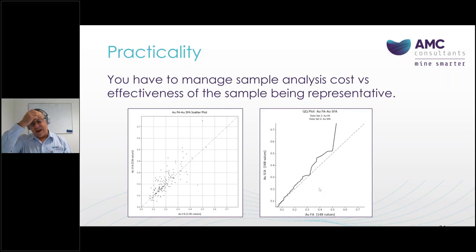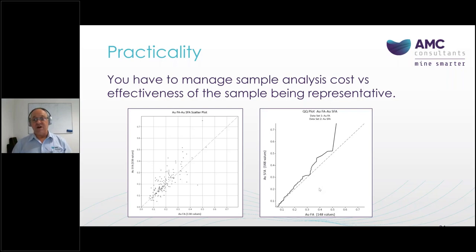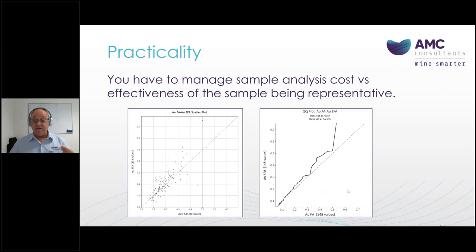Practicality has to come to the fore. If your sampling theory says you need a 50-kilogram sample to be representative, you have to be very careful — you're immediately entering the territory of commercial laboratory costs, crushing to the required size, and using large bin splitters to representatively split the material. The question you must ask is: what is the difference at the level of accuracy required for your mineral resource?